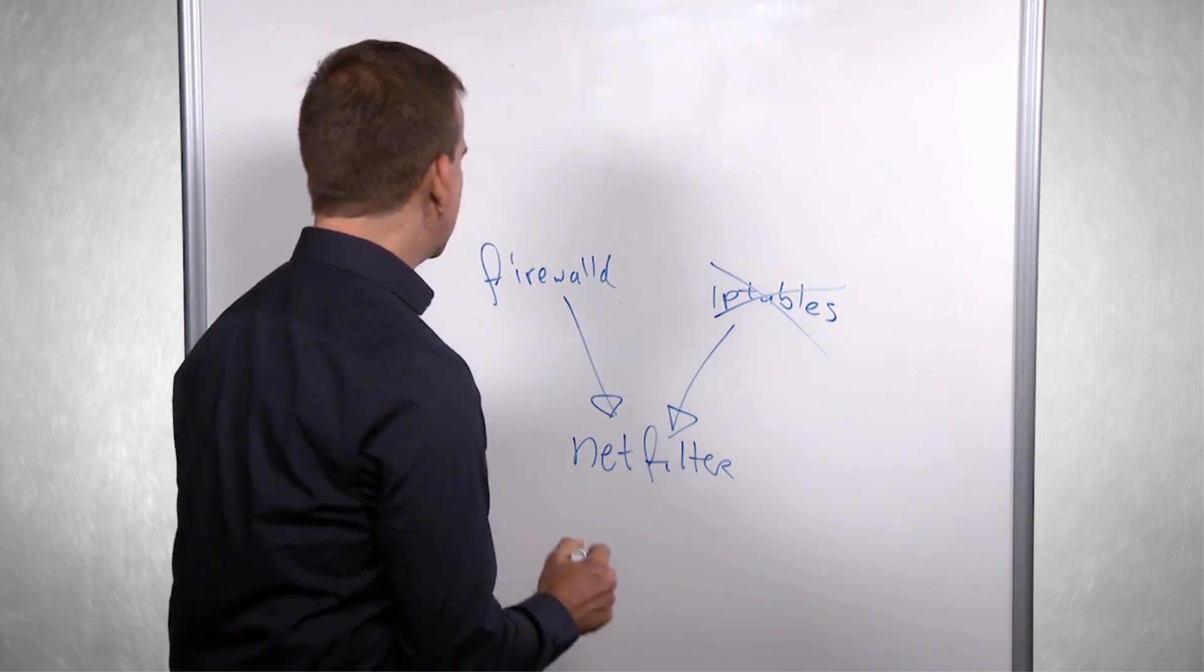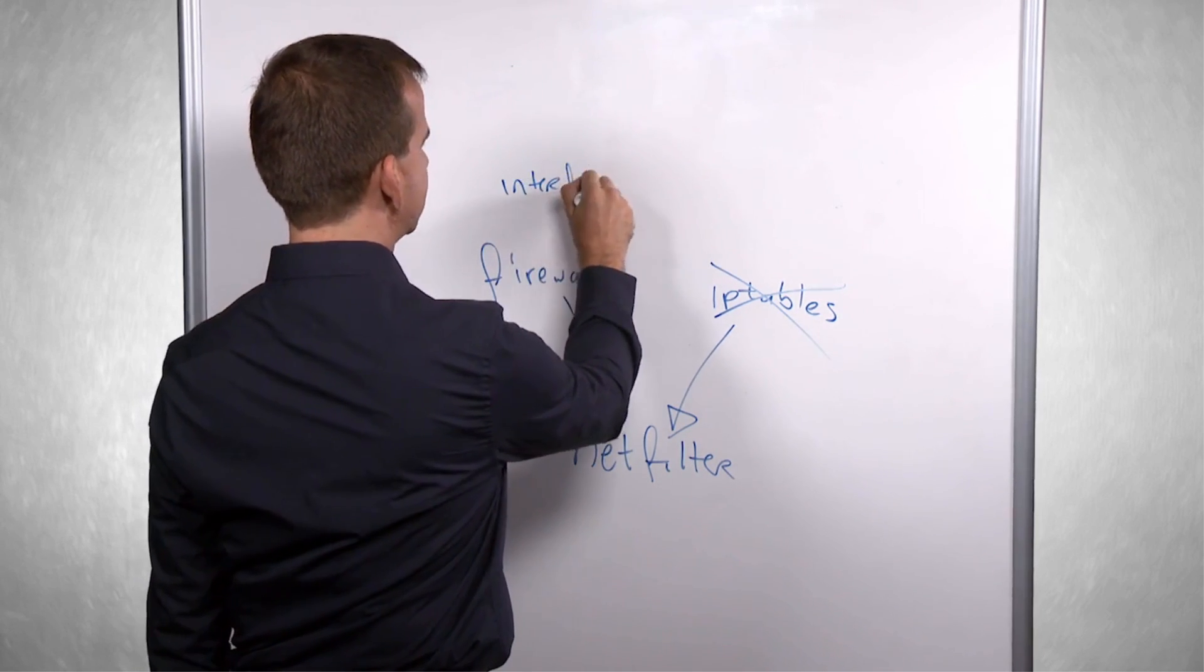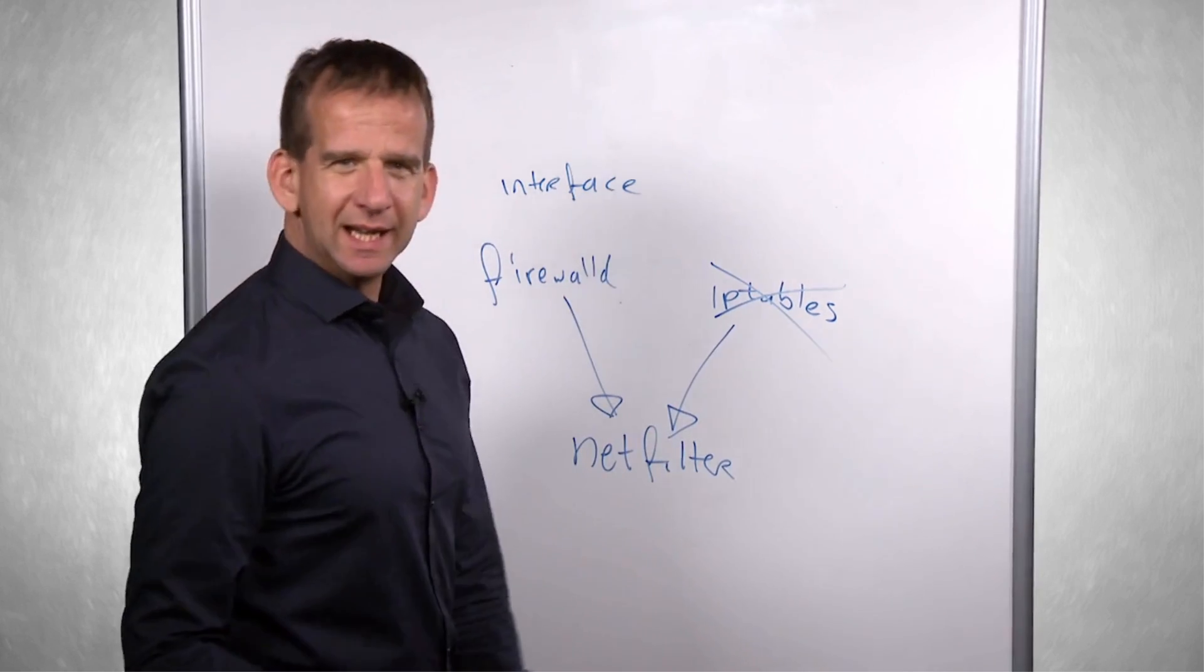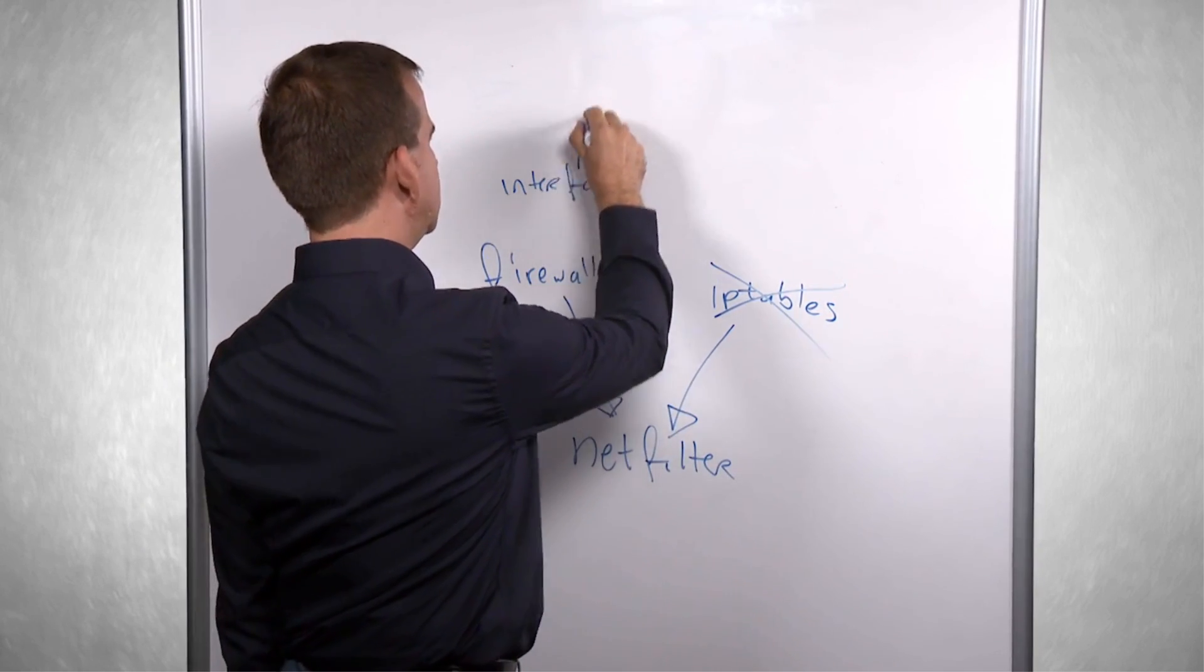To work with firewalld, you have interfaces. And each interface you will assign to a zone.